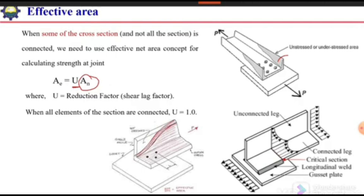Similarly, for an angle section, the unconnected leg will be unstressed. There will be stress in the connected leg and only some part of the unconnected leg. If we compare stress values: away from the connection, both legs of the angle have constant stress. But at the critical section at the joint, the connected leg has constant stress, while the unconnected leg has maximum stress near the connected leg, and as it goes away, the stress goes on reducing.